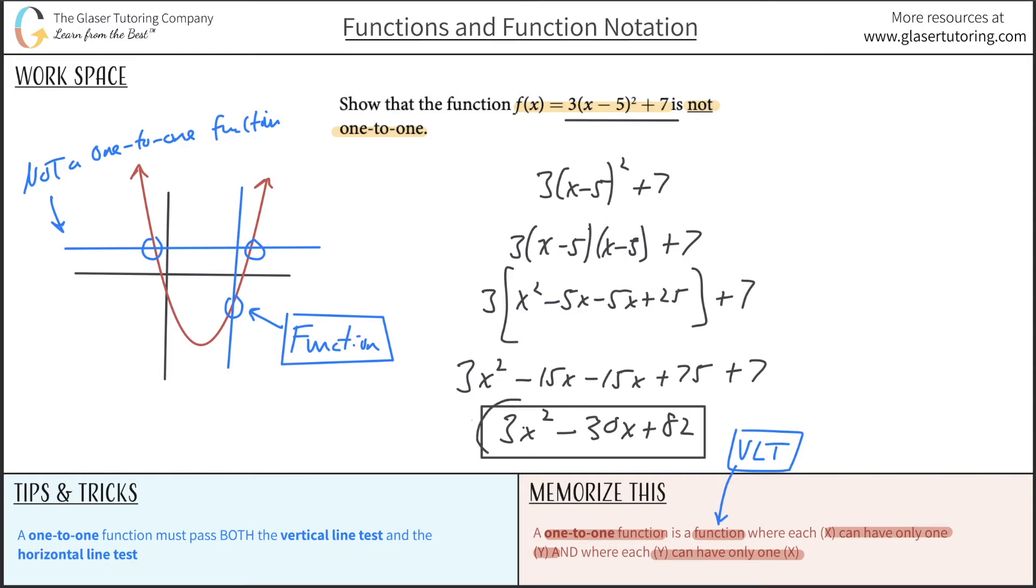Now notice the coefficient of your x² value right here is positive. And therefore, you can remember it this way. If you have a positive x² value, you're happy, you're positive. So you got a big smiley face. It's a big smiley. It looks like the smiley face of the Joker. This is for a positive x² value.